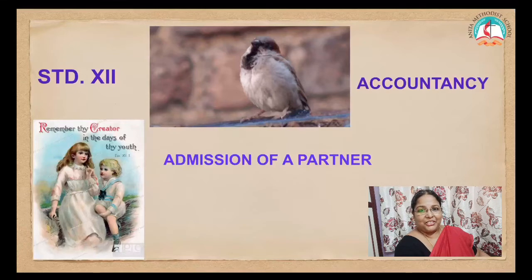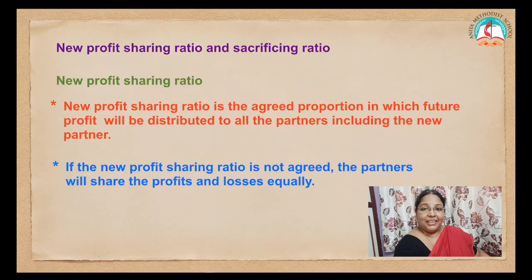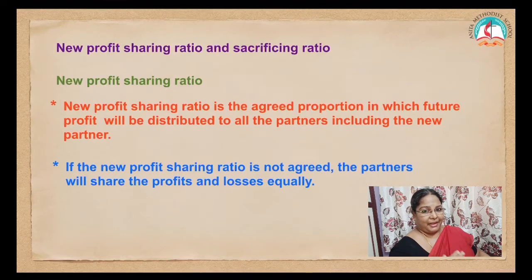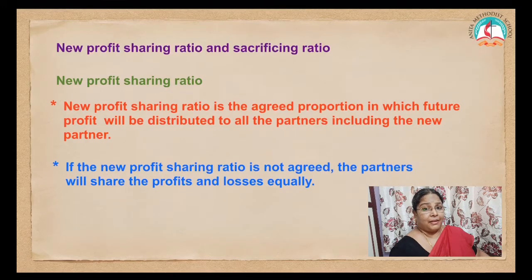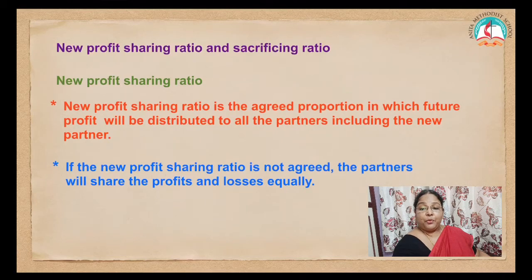Admission of a partner — we are going to continue. In today's lesson, we are going to learn about the new profit sharing ratio and sacrificing ratio. When a new partner comes into the business, they form the partnership again — they reconstitute it. One of the adjustments which has to be made is framing the new profit sharing ratio. New profit sharing ratio is the agreed proportion in which future profit will be distributed to all the partners, including the new partner. If the new profit sharing ratio is not agreed, the partners will share the profits and losses equally.